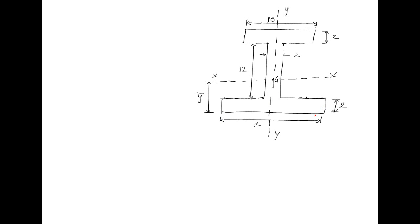You can see this I-section with all the dimensions given here. This I-section is symmetrical about the Y-axis. As per this diagram, we can say this I-section or this flange is symmetrical about the Y-axis, and accordingly its CG will lie on the Y-axis only. So its CG will lie on the Y-axis; G is the CG here where X equals 0.